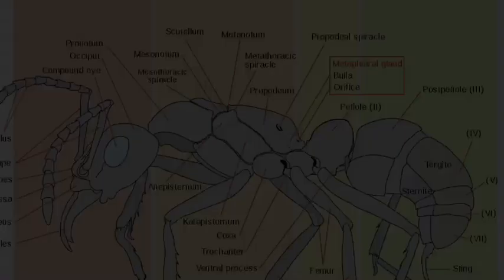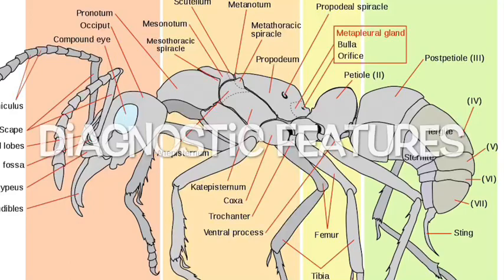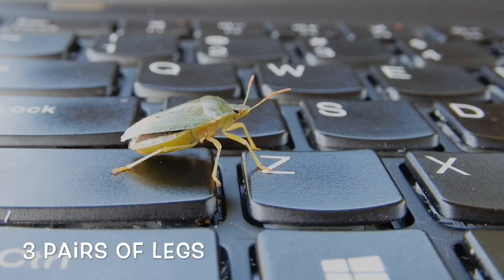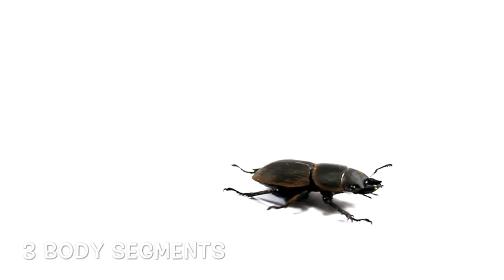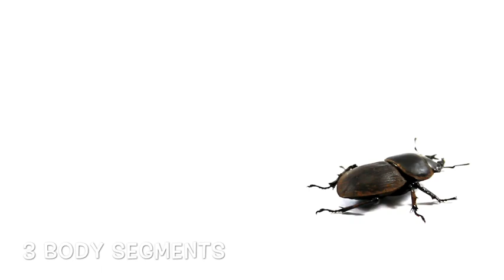The diagnostic features of an insect are: they have three pairs of jointed legs, so six legs altogether. They have three body segments, so you can see the body is split into three different sections.